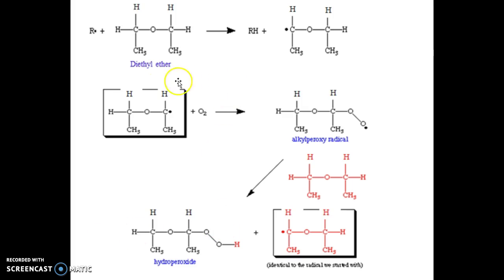This free radical, which is diethyl ether, can react with oxygen. They will form alkyl peroxy radical.